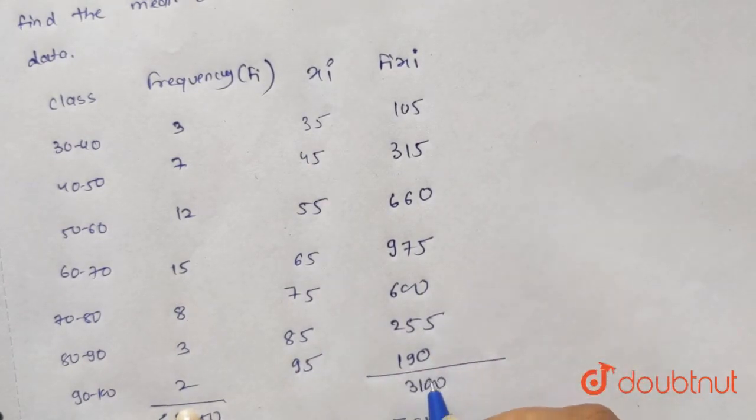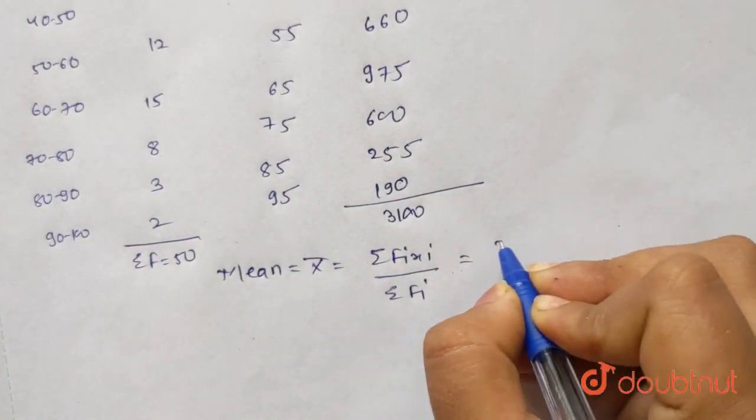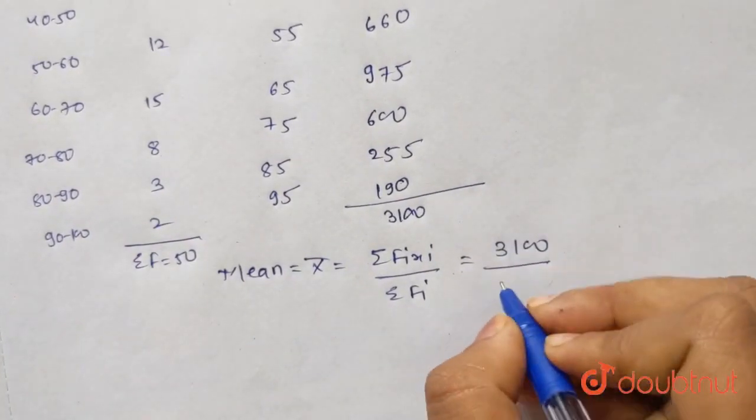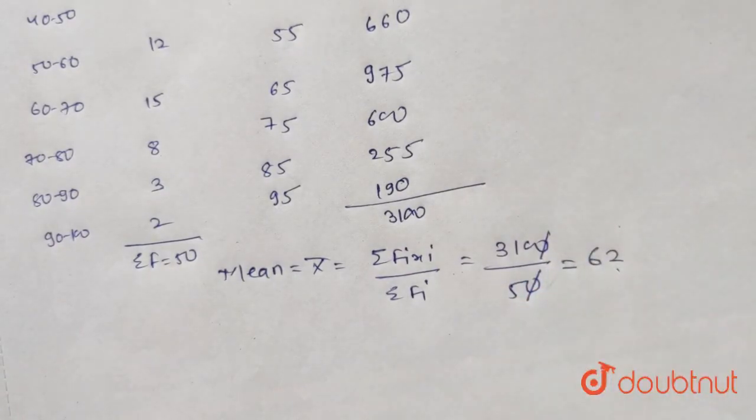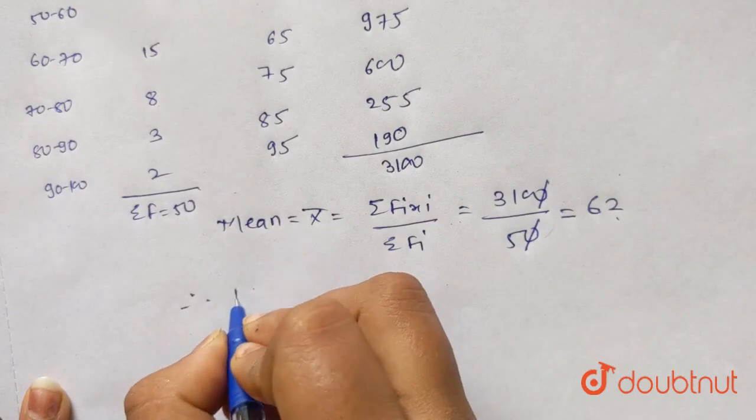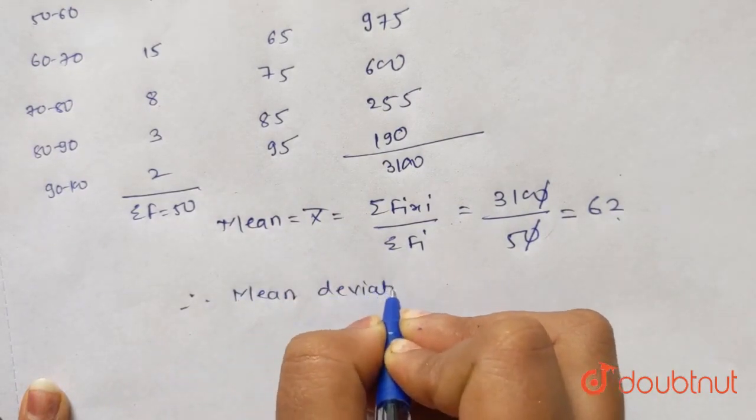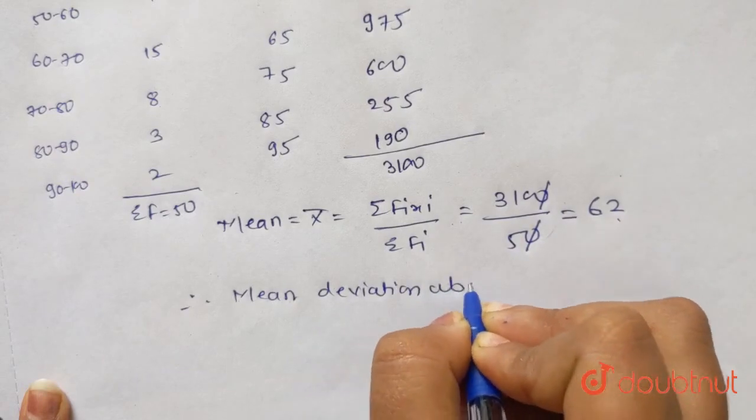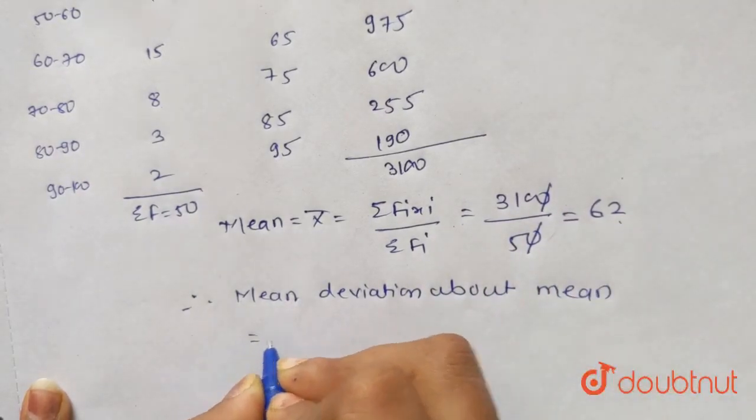The sum equals 3100. Mean x bar equals 3100 divided by 50, which equals 62.